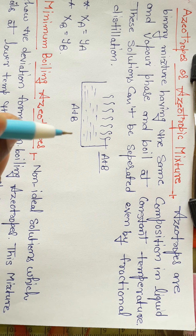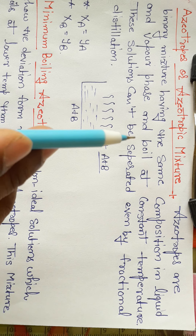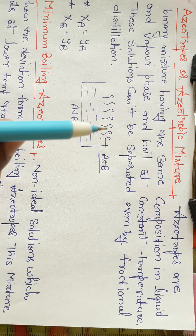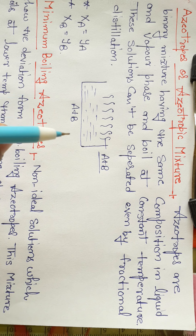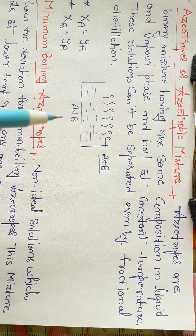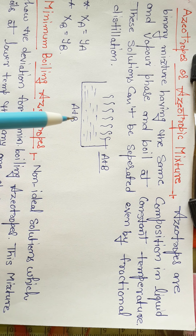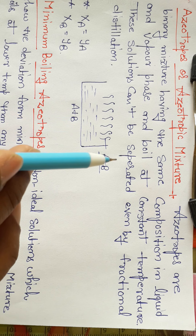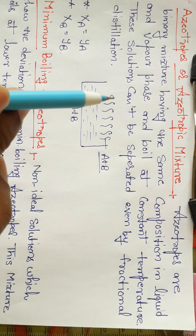The composition of the liquid is the same in the vapor phase. So suppose we have A and B, two components in a binary mixture. The composition of A and B in the liquid phase is the same as in the vapor phase.